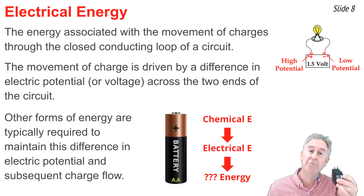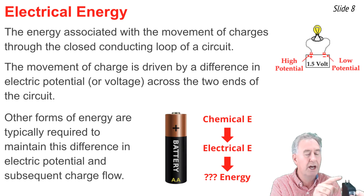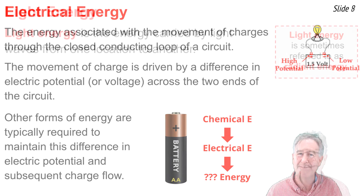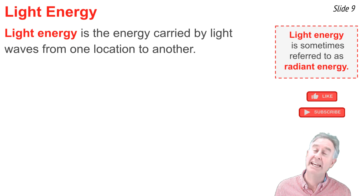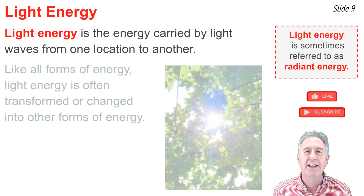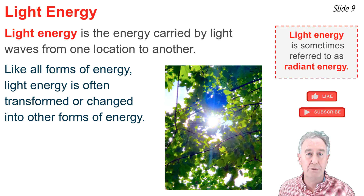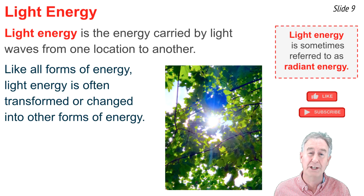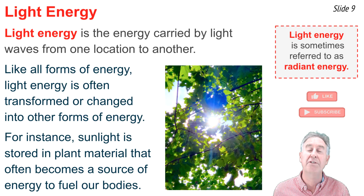In our homes, we plug devices into outlets and rely on an electrical utility company to establish a potential difference across the device. Light energy is the energy carried by light waves from one location to another — also called radiant energy because it radiates outward from sources like the sun, stars, or a light bulb. Like all forms of energy, light energy can be transformed: when sunlight strikes green vegetable matter, photosynthesis occurs and that light energy is transformed into chemical energy stored in the vegetation, which we can eat and store as chemical energy in our bodies.